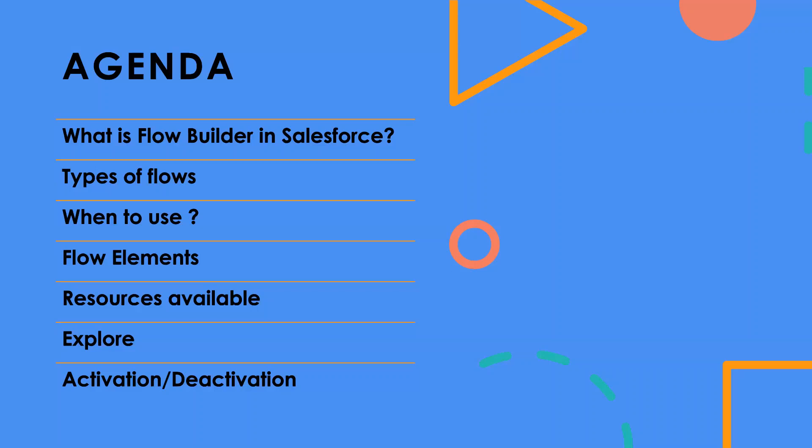Flow Builder is a declarative interface used to build individual flows. It can be used to build code-like logic without using a programming language. However, not every level of complexity can be handled by Flow Builder, so let's see what flows are available and what level of scenarios or processes can be achieved.